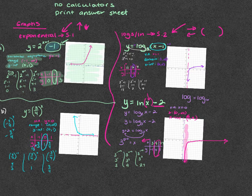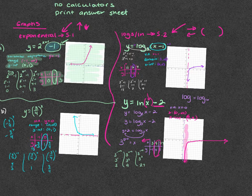For ln we approximate e as 3, so in the world of ln, if we weren't graphing and had a calculator we'd keep it as log base e. But since we don't have a calculator, if you see ln on your quiz and have to graph it, you're going to approximate it as log base 3.